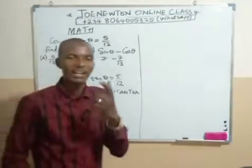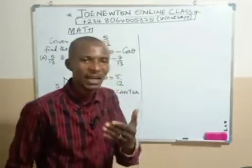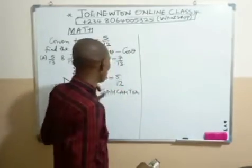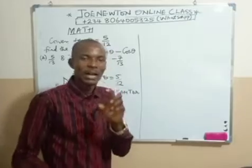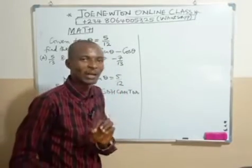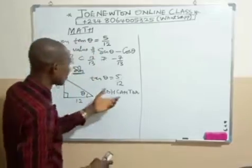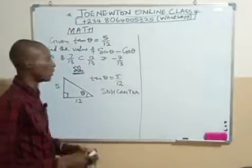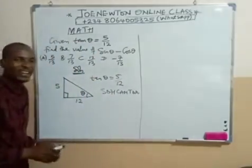This is very important because another question might come up with sine theta given, so you place the fraction according to the function or the ratio of that particular function. If it is cosine, it should be adjacent over hypotenuse. Now, what is the next step?